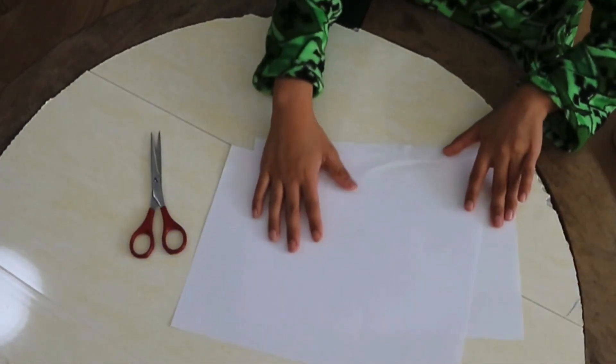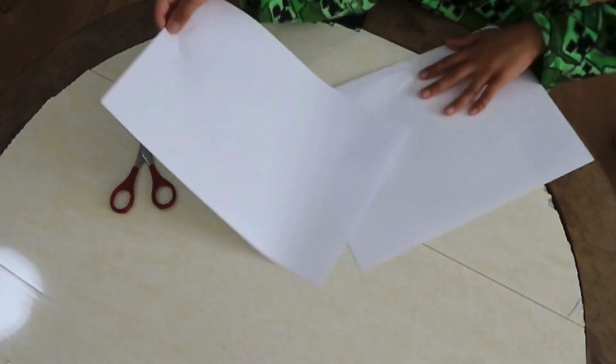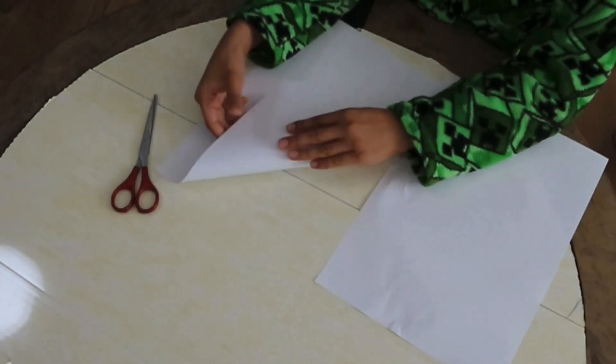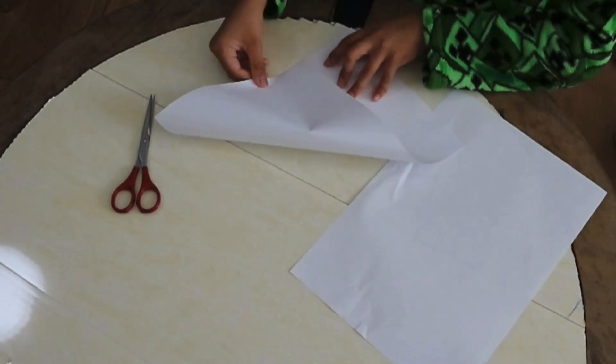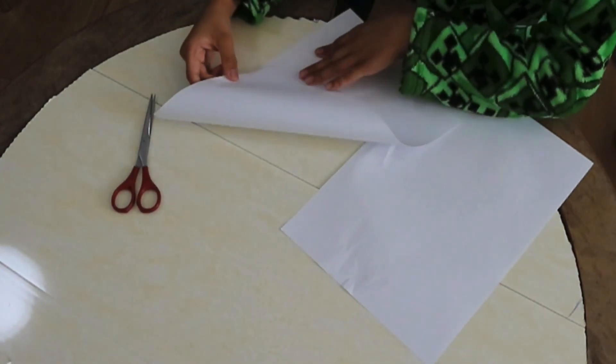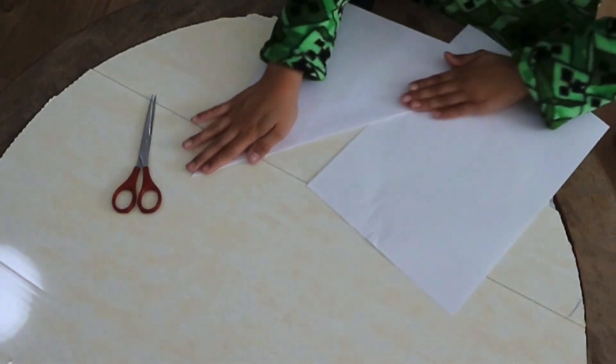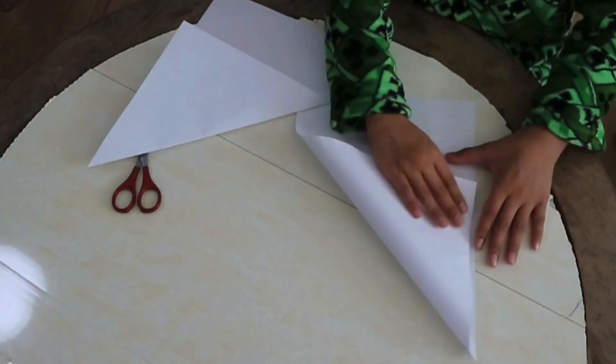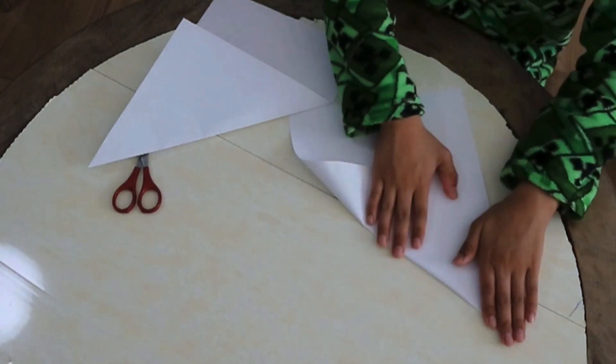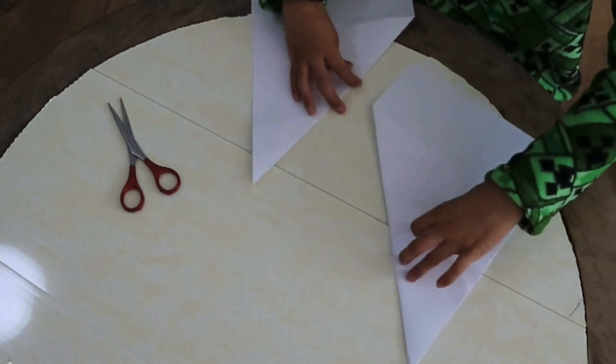So you need two pieces of paper and some scissors. First, you do this. Yeah, like this. We have two. Alright, now we should cut them.